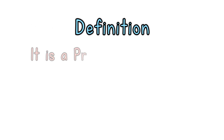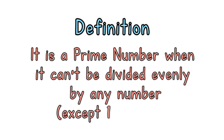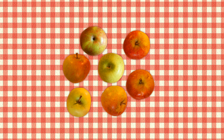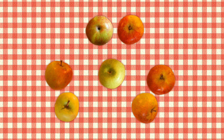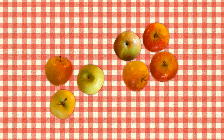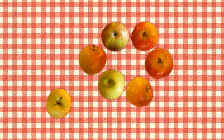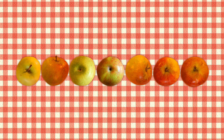Definition: It is a prime number when it can't be divided evenly by any number except 1 or itself. Example — we have 7 apples. Is 7 a prime number or composite number? 7 is prime. We cannot divide 7 evenly by 2 — you would get 2 lots of 3 with 1 left over. We cannot divide 7 evenly by 3 — you would get 3 lots of 2 with 1 left over. We cannot divide 7 evenly by 4, or 5, or 6. We can only divide 7 into 1 group of 7, or 7 groups of 1. So 7 can only be divided evenly by 1 or itself. So 7 is a prime number.